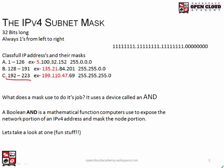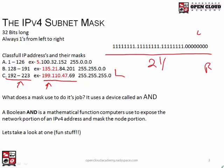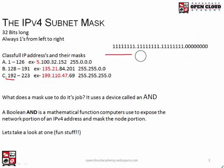Here's the class C range. A class C address has its first octet in the 192–223 range — 199 is in there. The classical class C mask is 255.255.255.0 — that's 24 ones from left to right, and then eight zeros in the host area. The mask defines what portion of the IP address is network: the ones represent the network bits, and the zeros represent the host area.